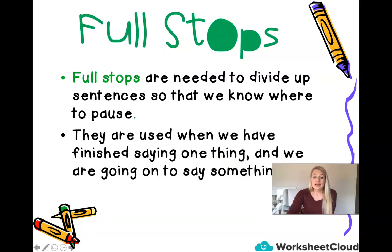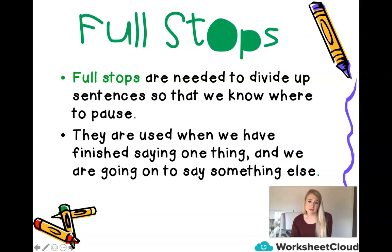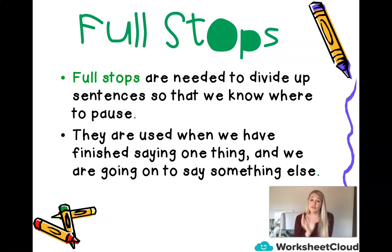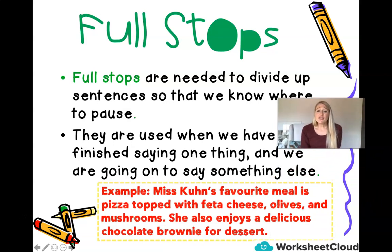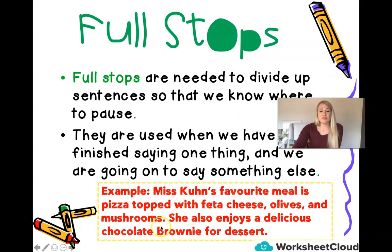Full stops are also used when we have finished saying one thing and we are going to say something else. So it's not only just for one sentence — especially in paragraphs, we say one thing in a sentence, then full stop, second sentence. For example: Miss Kun's favorite meal is pizza topped with feta cheese, olives, and mushrooms. She also enjoys a delicious chocolate brownie for dessert. And that is the truth — my favorite meal is pizza. They're just delicious. I can eat pizza every day of the week. And you can see in the example, full stop — I had a little pause. Because if this full stop wasn't there, this would be one long sentence and I would be gasping for air.